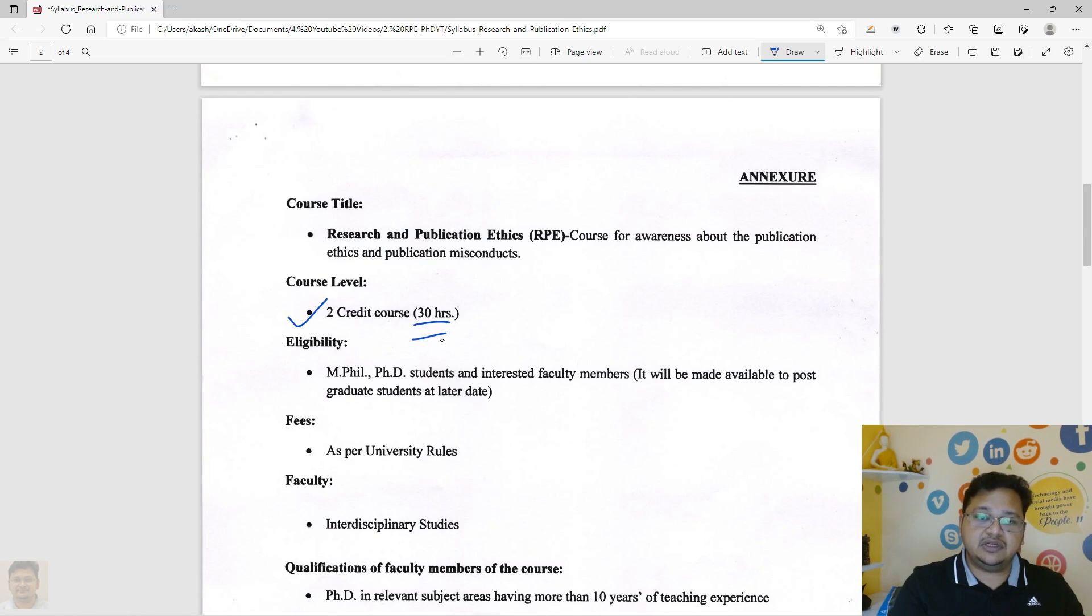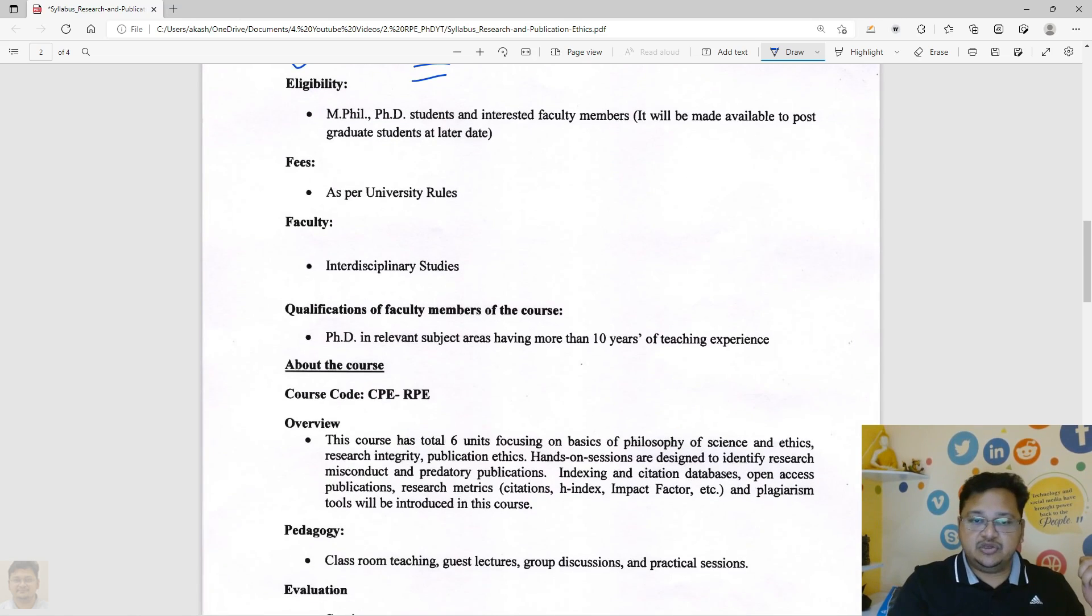And the subject is called RPE, Research and Publication Ethics, and the code basically the UGC has framed is CPRP.